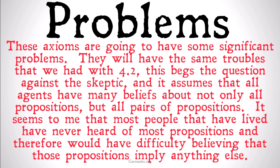The moral of the story is that these are going to be very strange beliefs to posit that everyone has about every single proposition. These axioms will have significant problems — all the same troubles we had with Axiom 4.2. This begs the question against the skeptic and assumes that all agents have many beliefs about not only all propositions but all pairs of propositions. Most people who have lived have never heard of most propositions that exist, and would therefore have difficulty believing that those propositions imply anything else.